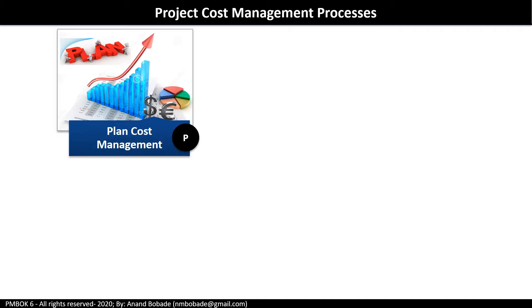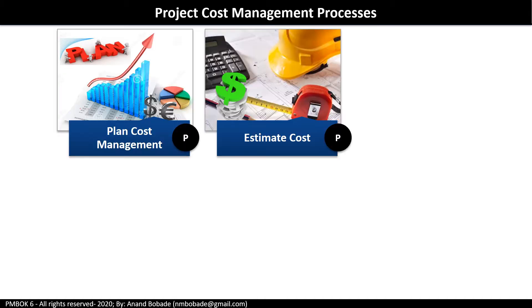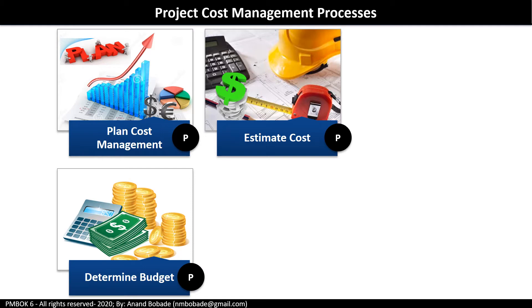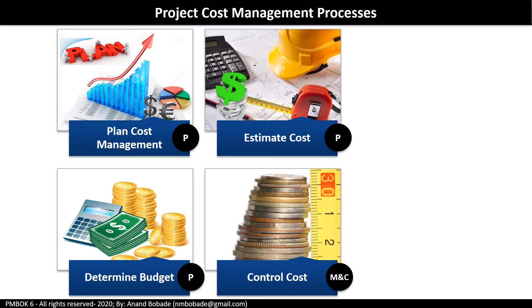We have four processes in the project cost management knowledge area. The first three processes are under the planning process group: plan cost management, estimate cost, and determine budget. The last process, control cost, is in the monitoring and controlling process group. The focus of this session is to learn the estimate cost process.